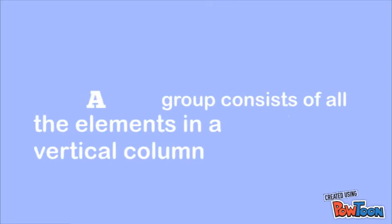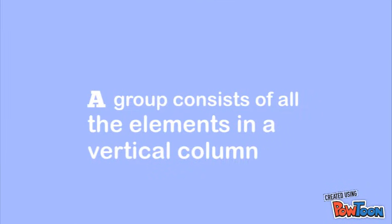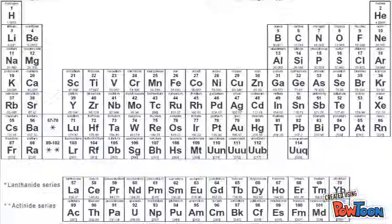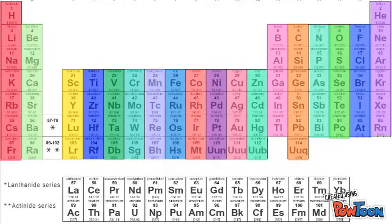A group consists of all the elements in a vertical column. There are 18 groups in the periodic table, which includes the D block elements, but not the F block. The elements within a group all have similar physical or chemical properties because they all contain the same number of electrons in their outermost electron shell.